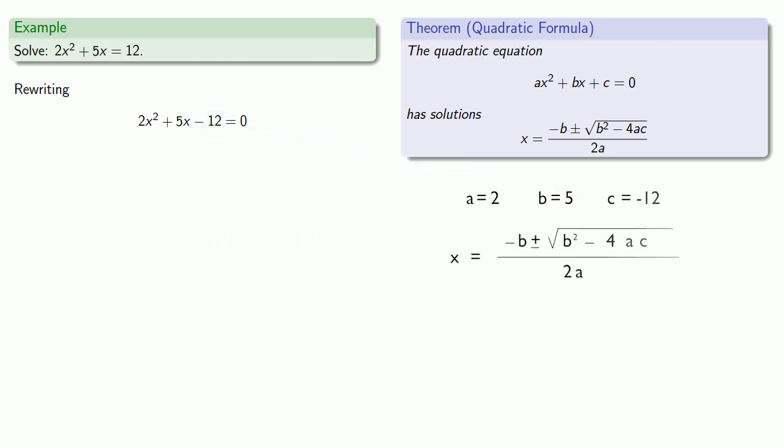Equals means replaceable, so every place I see a, I'm going to replace it with 2. Everywhere I see b, I'll replace it with 5. And every place I see c, I'll replace it with negative 12.